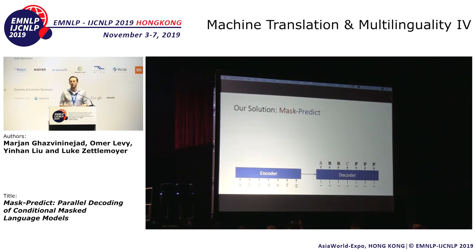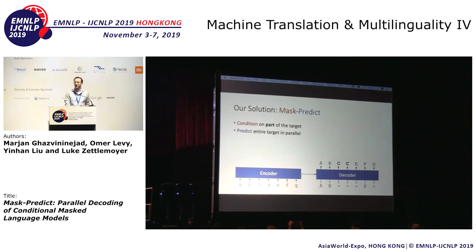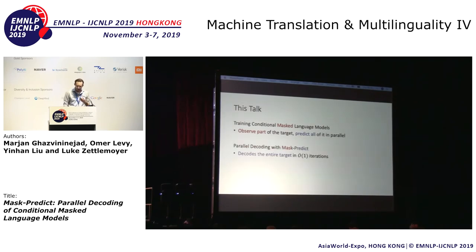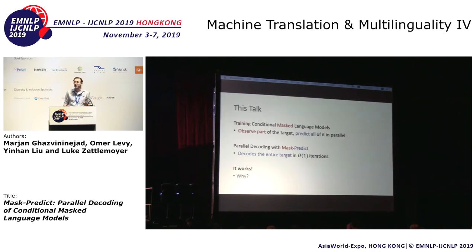The way we're going to tackle the multimodality problem is by conditioning on part of the target sequence, but still predicting everything else in parallel. We're going to repeat this process for a constant number of iterations until we get our results. In this talk, I'll first tell you about how we trained encoder-decoder transformers as conditional masked language models, which observe part of the target and predict all of it in parallel. We'll then talk about the mask predict decoding algorithm — our main contribution — which can decode the entire target sequence in a small constant number of iterations. Finally, I'll explain how it addresses the multimodality problem by gradually allowing the model to condition on more and more of the target tokens.